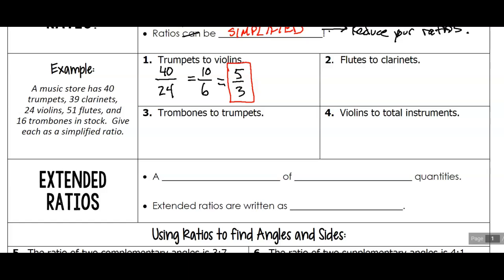So now we have trombones to trumpets. Trombones, we have 16, and trumpets, we had 40. And this is not reduced. I can divide each of these by four. So 16 divided by four is four, 40 divided by four is 10. And then I can reduce by two again. So that would be two to five.